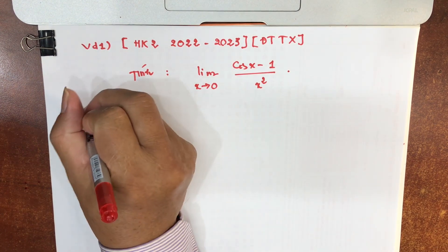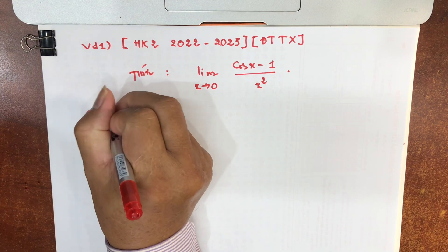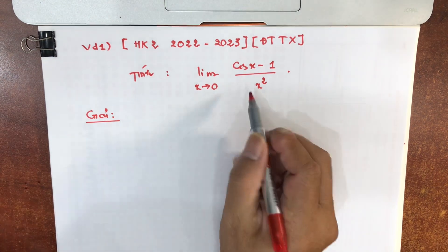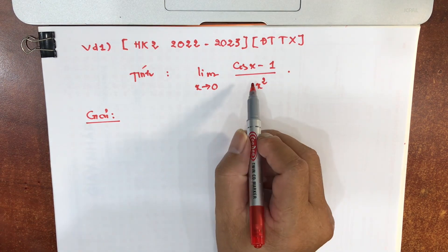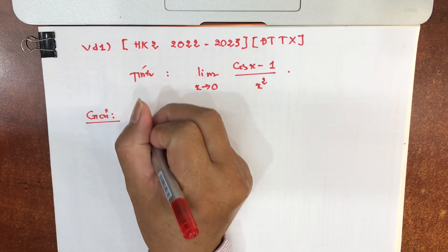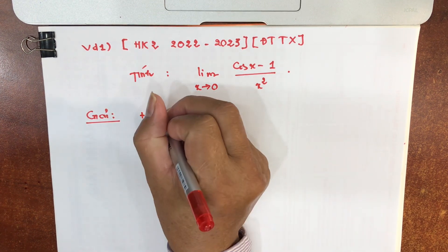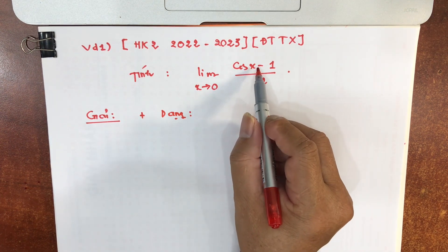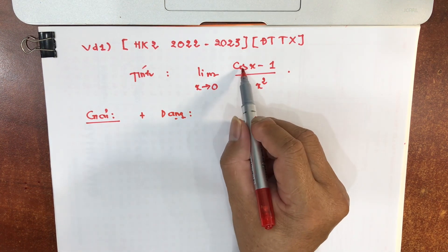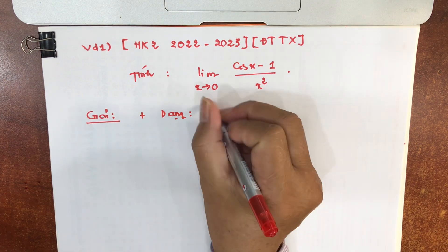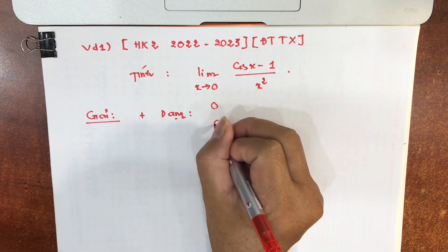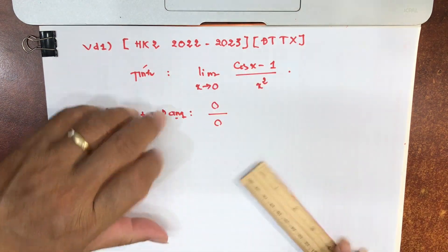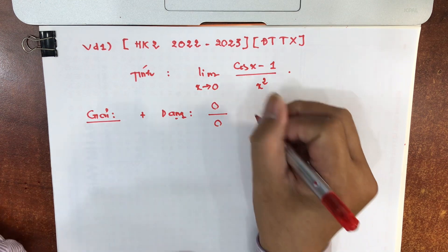Bài này có rất nhiều cách làm, nhưng nếu áp dụng quy tắc Lobitan thì mình làm như sau. Cả lớp lưu ý là cái giới hạn này nó có dạng: thay x bằng 0 vào biểu thức tử số, cot 0 là 1, 1-1 là 0. Dưới mẫu thay x bằng 0 thì được 0² = 0. Cho nên đây là một giới hạn rơi vào dạng 0/0, và đây là dạng vô định.